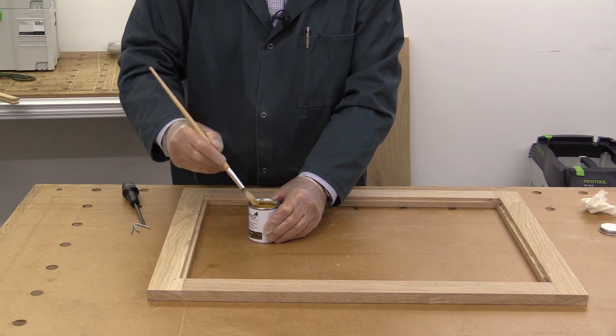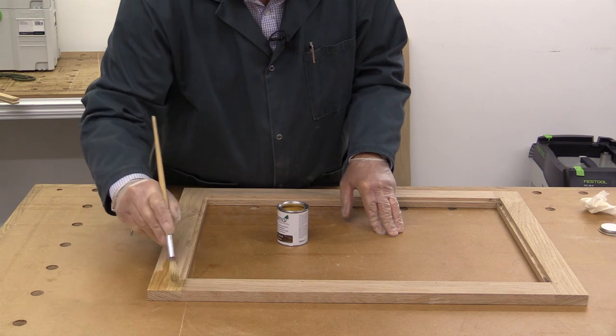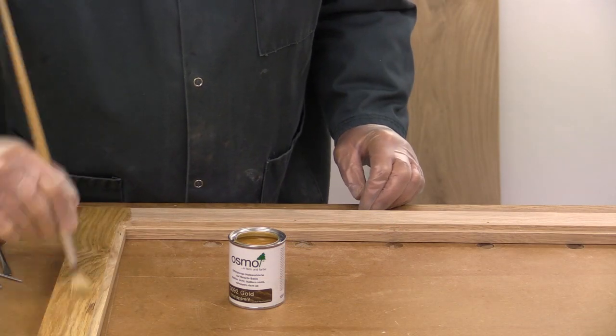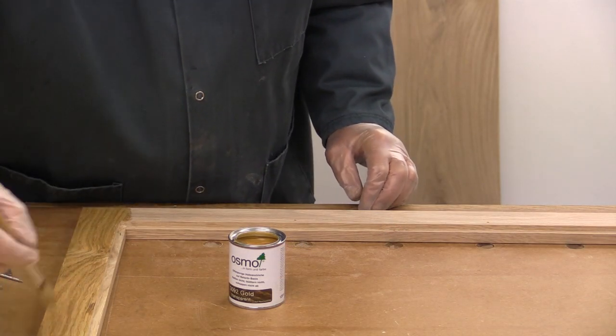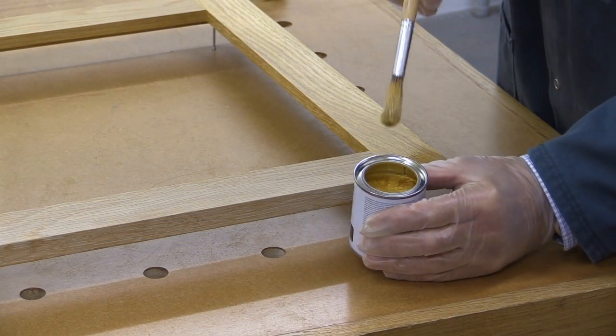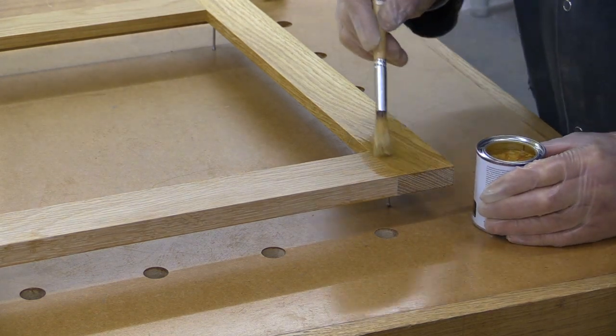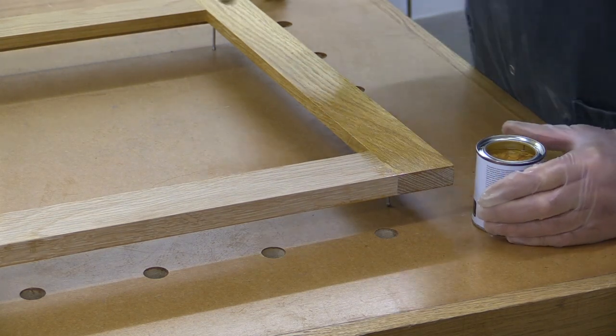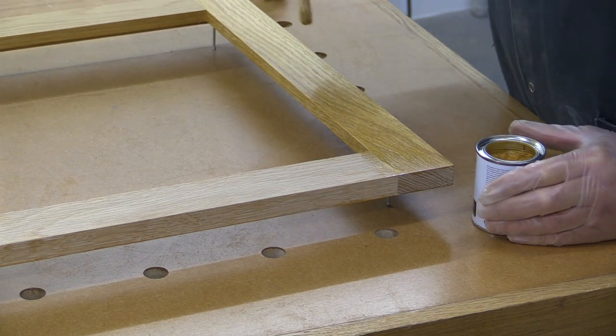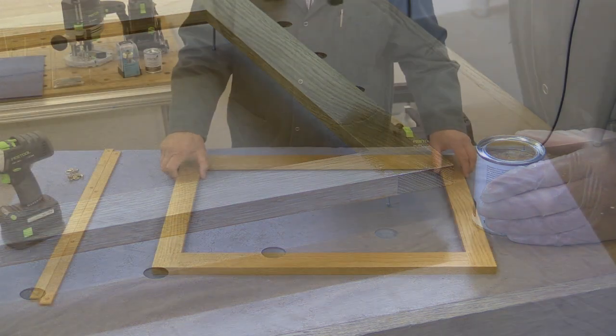Now the trick is with all Osmo products is to put them on thinly. Now this is interesting. When you see the colour of it in the tin it looks really shiny gold but when it goes on actually it's far more subtle and what it's really doing I think is just drawing out the grain or emphasizing the grain which I think is really nice particularly with a classic wood like oak, absolutely lovely.